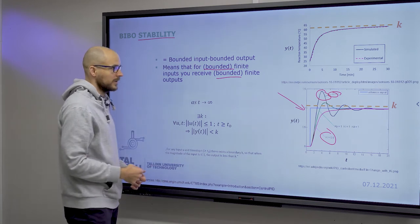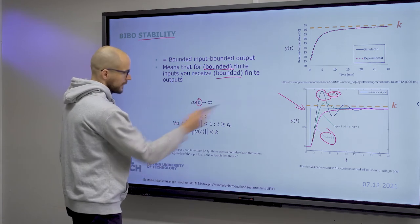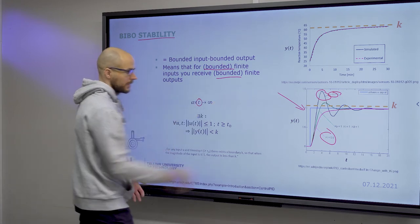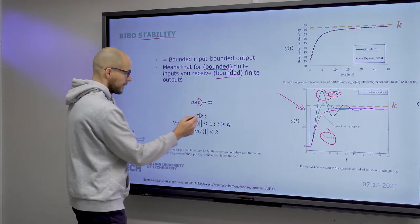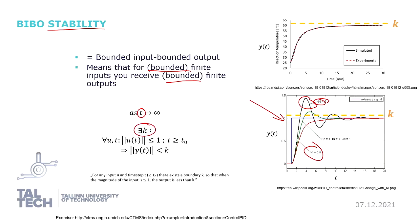So what it means mathematically is that as time goes to infinity, so that's what you see on this graph, there always exists a boundary or a bound for which every input and every time moment, if the input is bound,